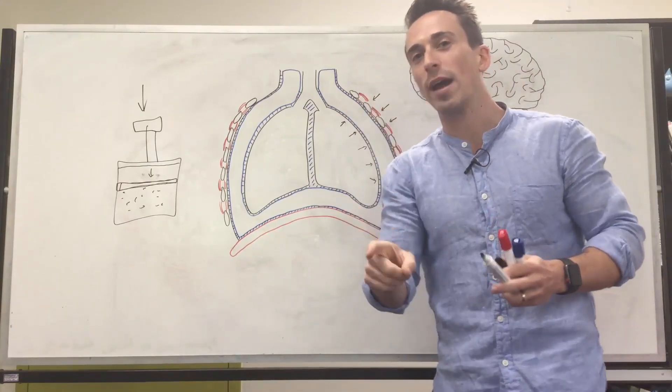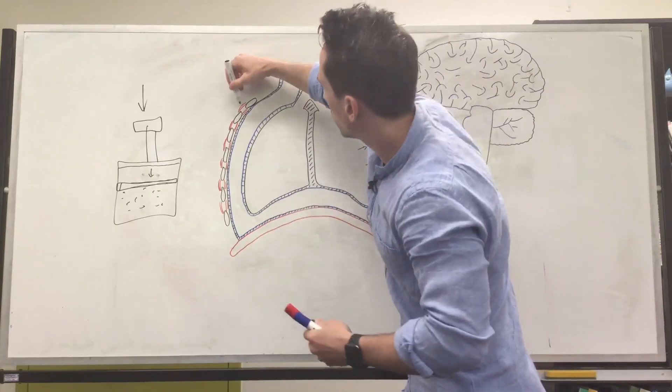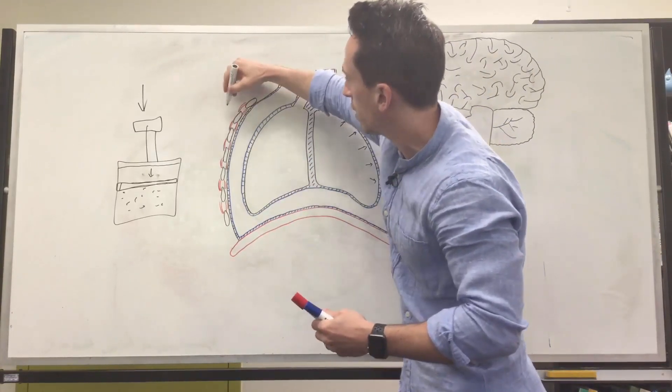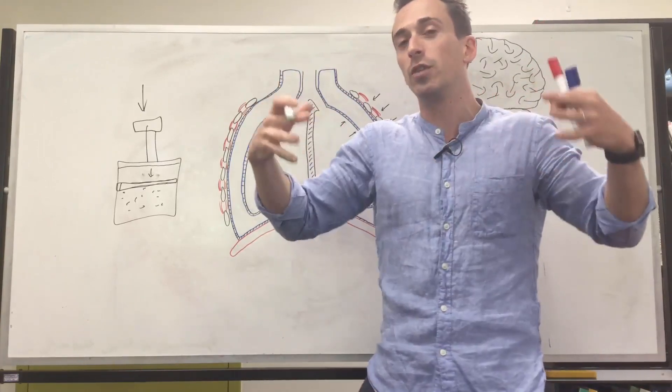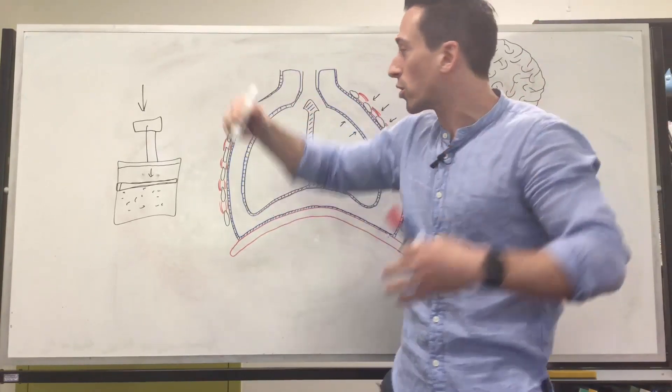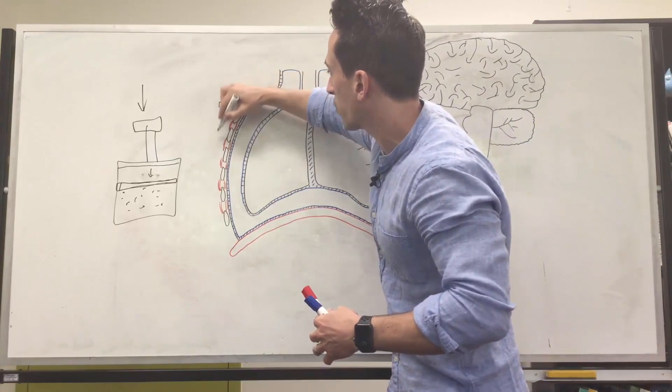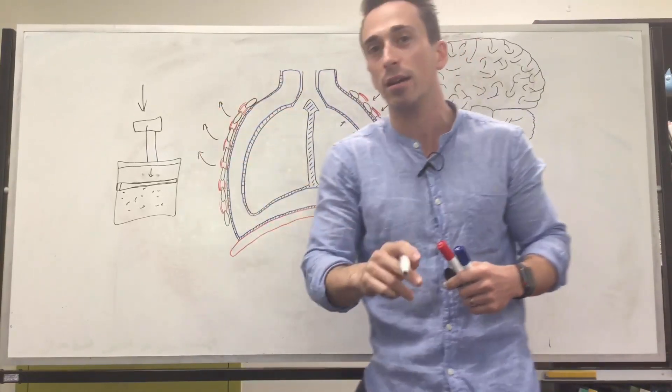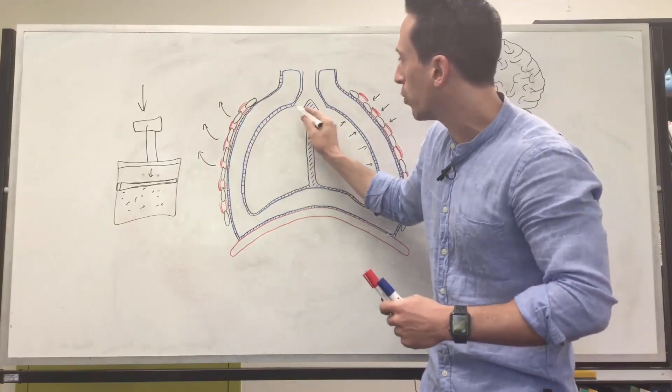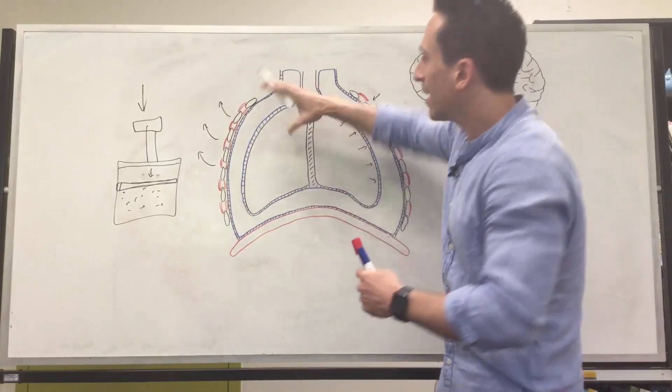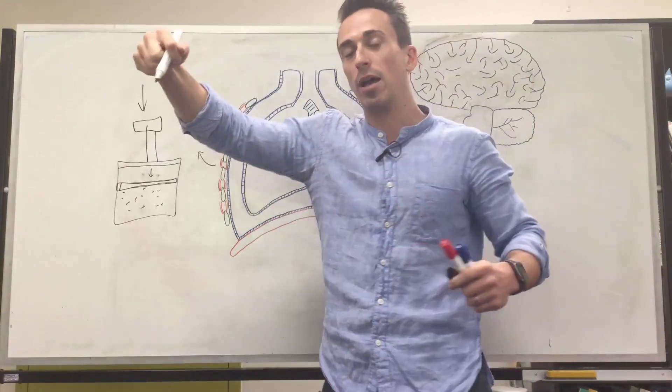And so when we want to contract these muscles out here called the external intercostal muscles, when we contract the muscles that sit between the rib cage, each individual ribs, the external intercostals contract them, they shift the rib cage up and out. And if you shift the rib cage up and out, you're going to pull on the pleural membrane, which pulls on the lungs and the lungs get pulled up and open.